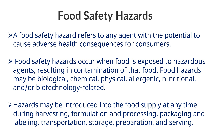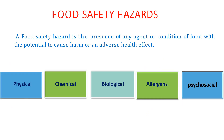Hazards are classified into five major types: physical, chemical, biological, allergens, and psychosocial. These are the five food safety hazards which may or may not cause adverse health effects.